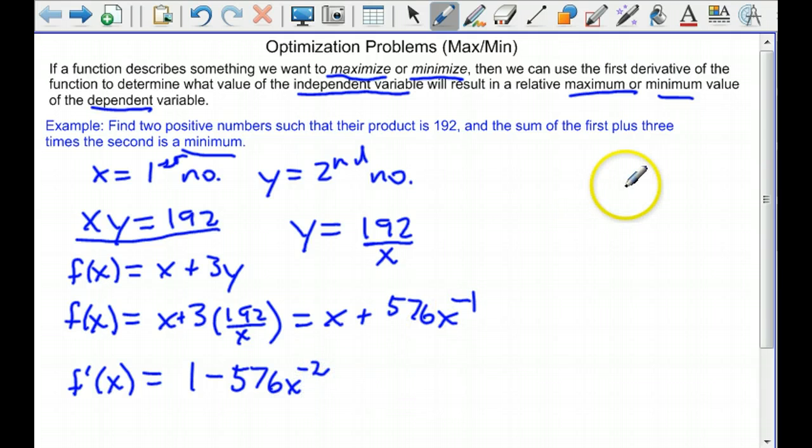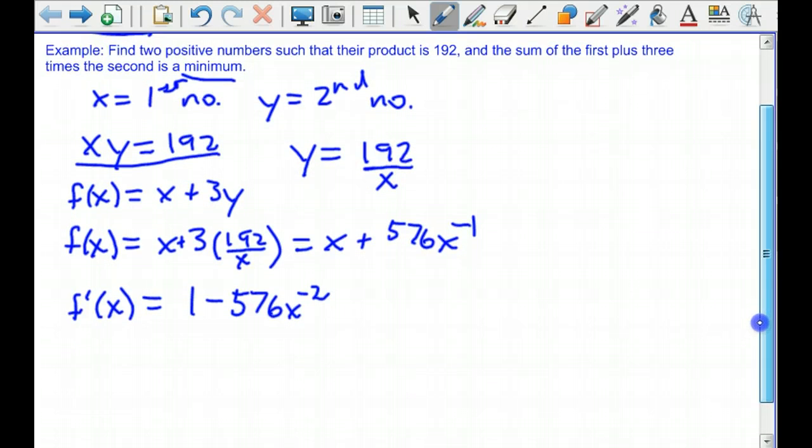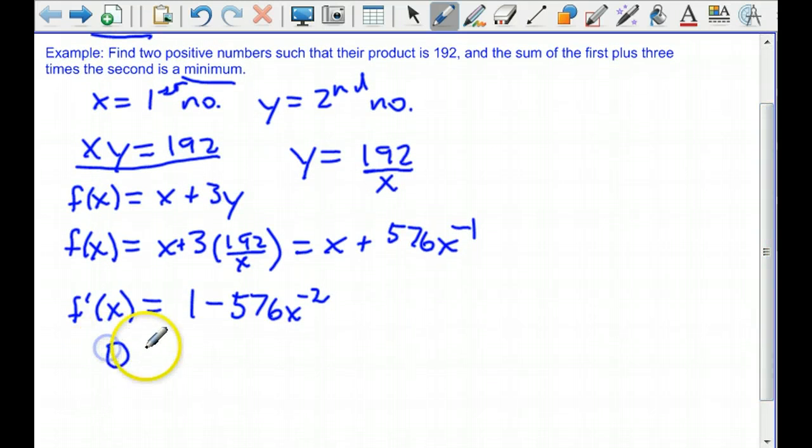Remember that we want to find relative extrema using our derivative. We're going to set it equal to 0 and solve for x. I get that x squared has to equal 576, which means that x is plus or minus the square root of 576.